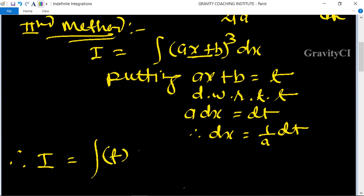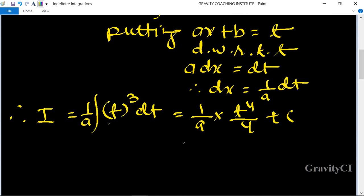= t, so t³, and dx = 1 upon a dt. So I = 1 upon a into t⁴ upon 4 + C. So now we put the